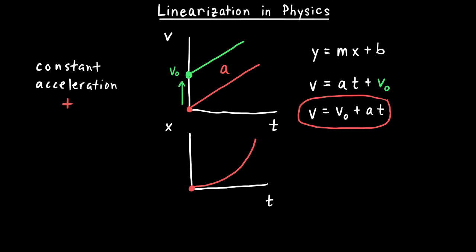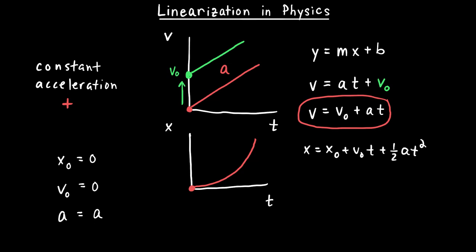Students in math classes learn that there are equations that describe this parabolic shape. Let's say our object starts with an initial position of zero and an initial velocity of zero, but the acceleration is some nonzero value. The kinematic equation I might apply is: new position equals initial position plus distance from initial velocity plus distance from acceleration. With both initial position and initial velocity equal to zero, those first two terms vanish and the equation reduces to one-half at squared.